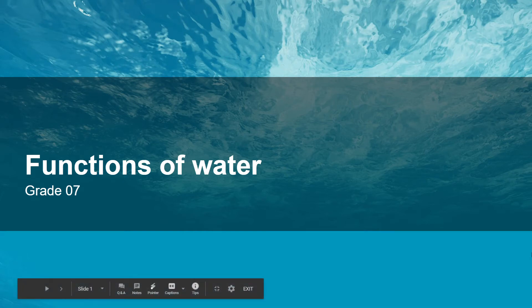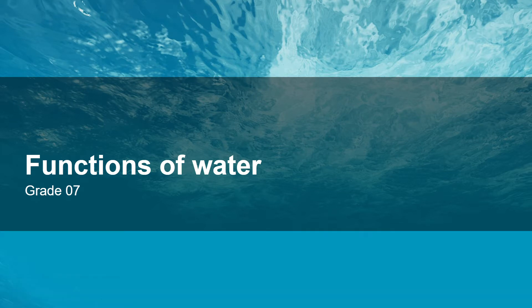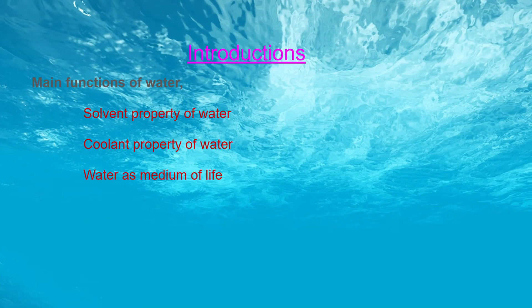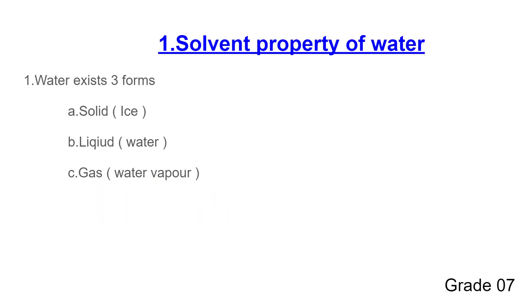Hi guys, today I'm going to talk about Grade 7, fourth lesson: Functions of Water. Before starting this video, I'd like to give some introductions. The main functions of water include: solvent property of water, coolant property of water, and water as a medium of life. Water exists in three forms: solid ice, liquid water, and gas water vapor.